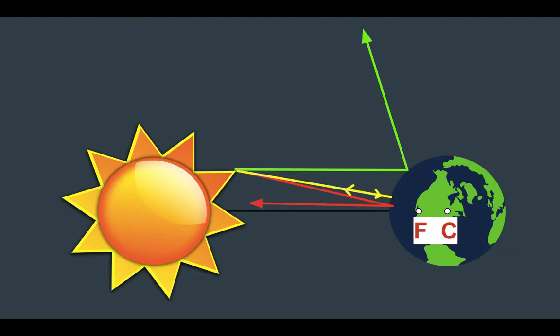And then you have rays that travel straight through the center of the earth, but because of the way the earth is shaped, they don't travel through the earth. They stop at the atmosphere, or the outside of the earth, and then they continuously bounce back and forth.